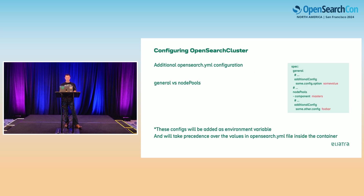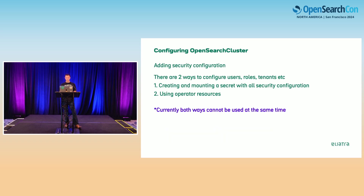Additional OpenSearch configuration can be done at the general or node pool level. The node pool level will override the general one if you mention the same config in both. Bear in mind these are added as environment variables in the pods, so if you enter a pod and look at the OpenSearch YAML file, you won't find these values there — you might be confused as to why it works. It's because they are added as environment variables and are read in at runtime.